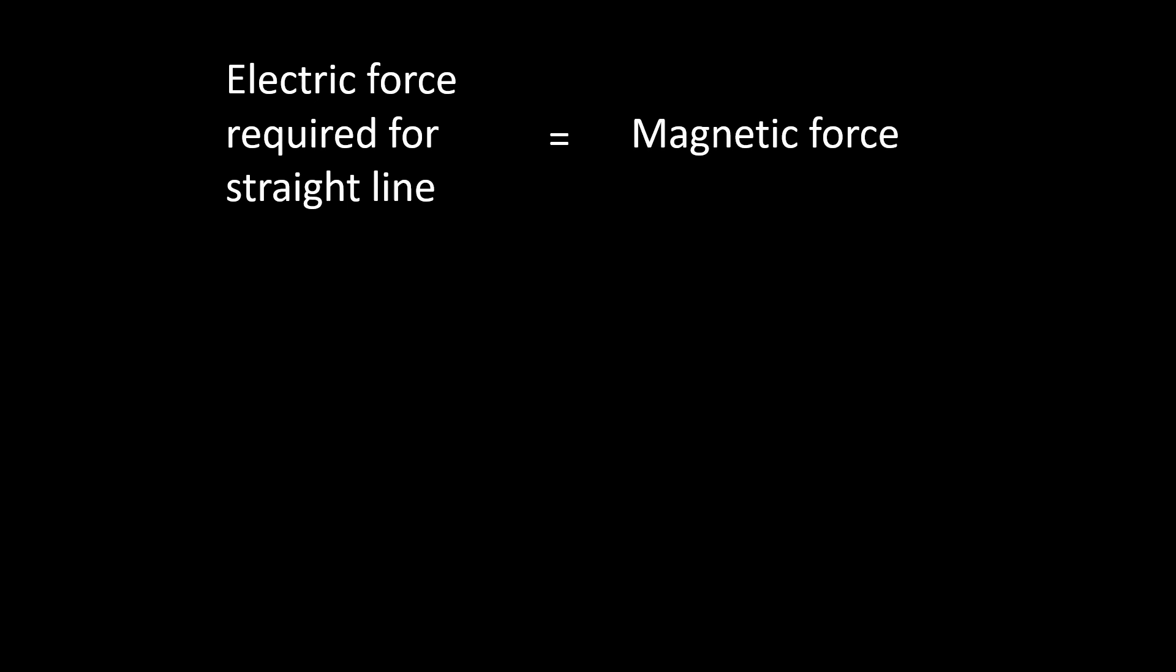We can say, therefore, that electric force needed for a path to be straight is equal to the magnetic force. Because if they don't equal, and the magnetic force is greater, it may curve towards the magnet. Or if the electric force is greater, it will curve towards the electric field. But if they are equal, the line will be straight.